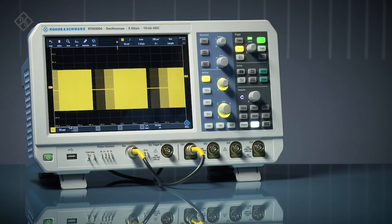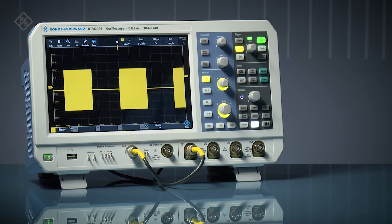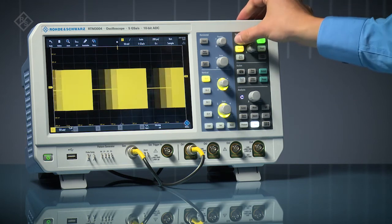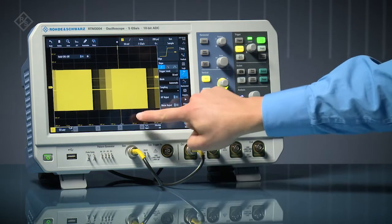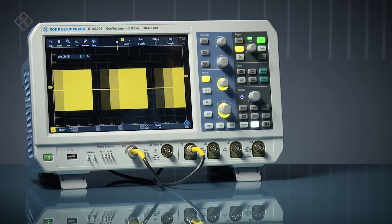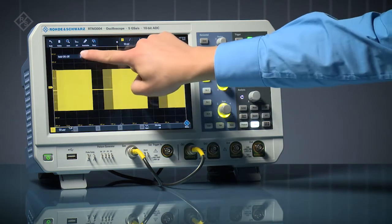Rohde & Schwarz RTM 3000 Series Oscilloscopes feature quick access. To get a stable trigger on this bursted signal, we use trigger holdoff. Quick access lets you drag any menu item, in this example trigger holdoff, directly on the main display. Use the quick access field to enable it.